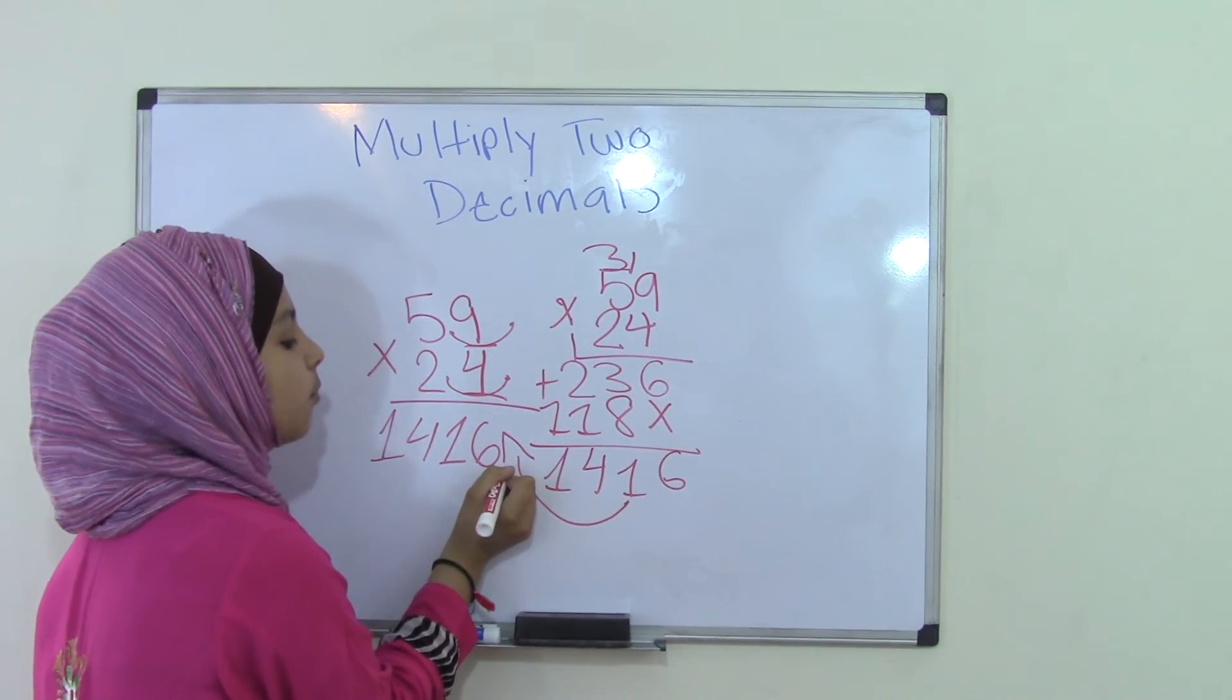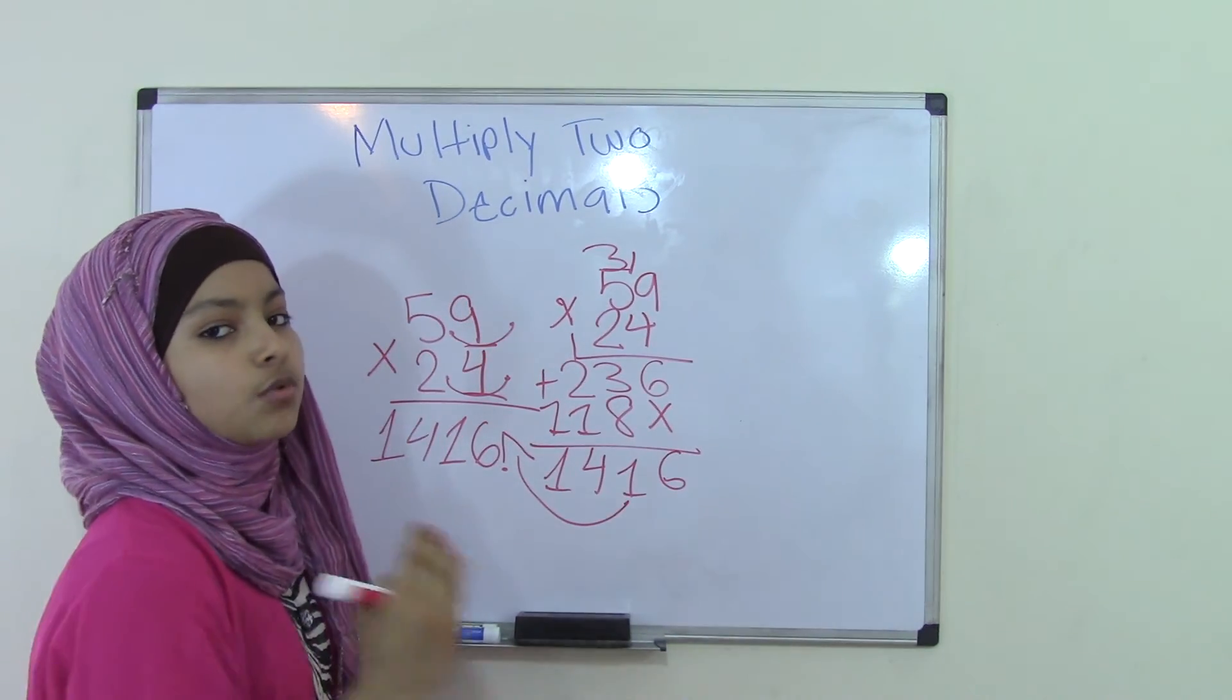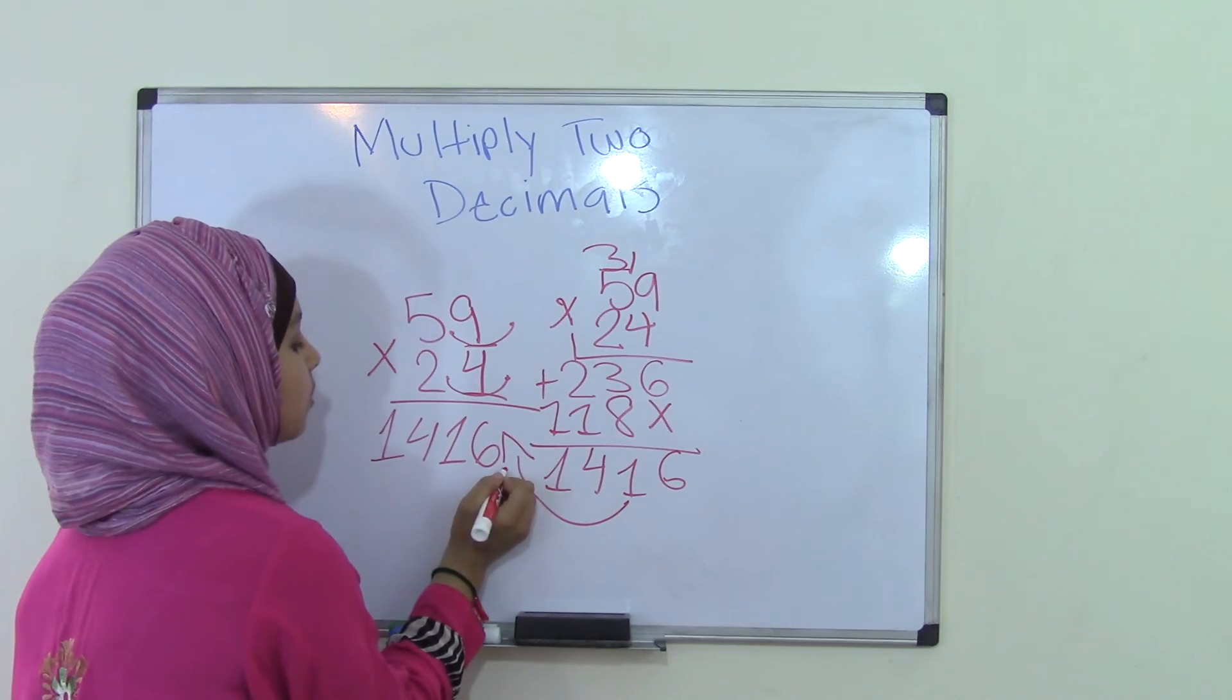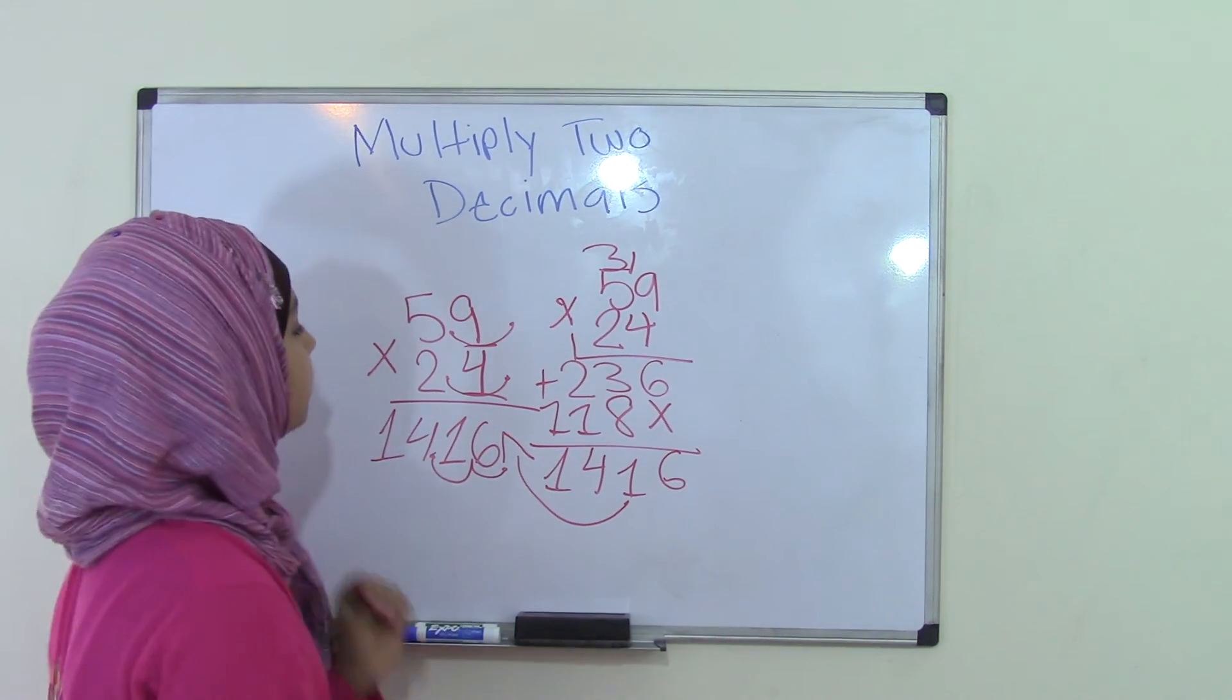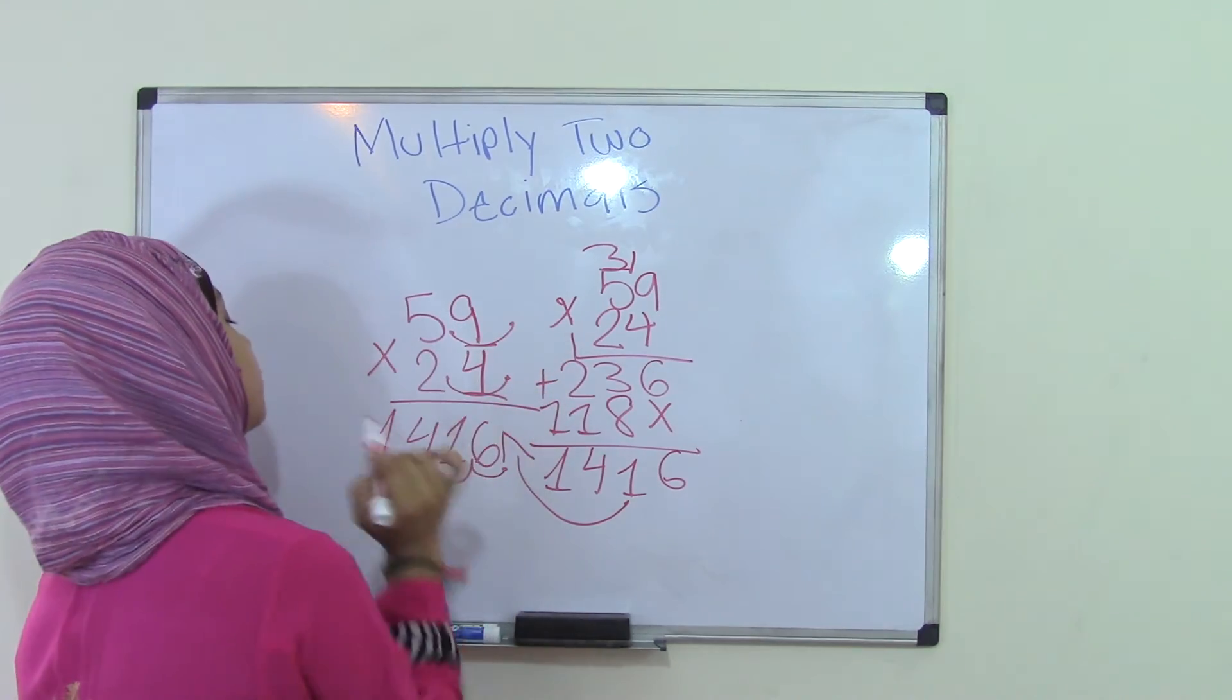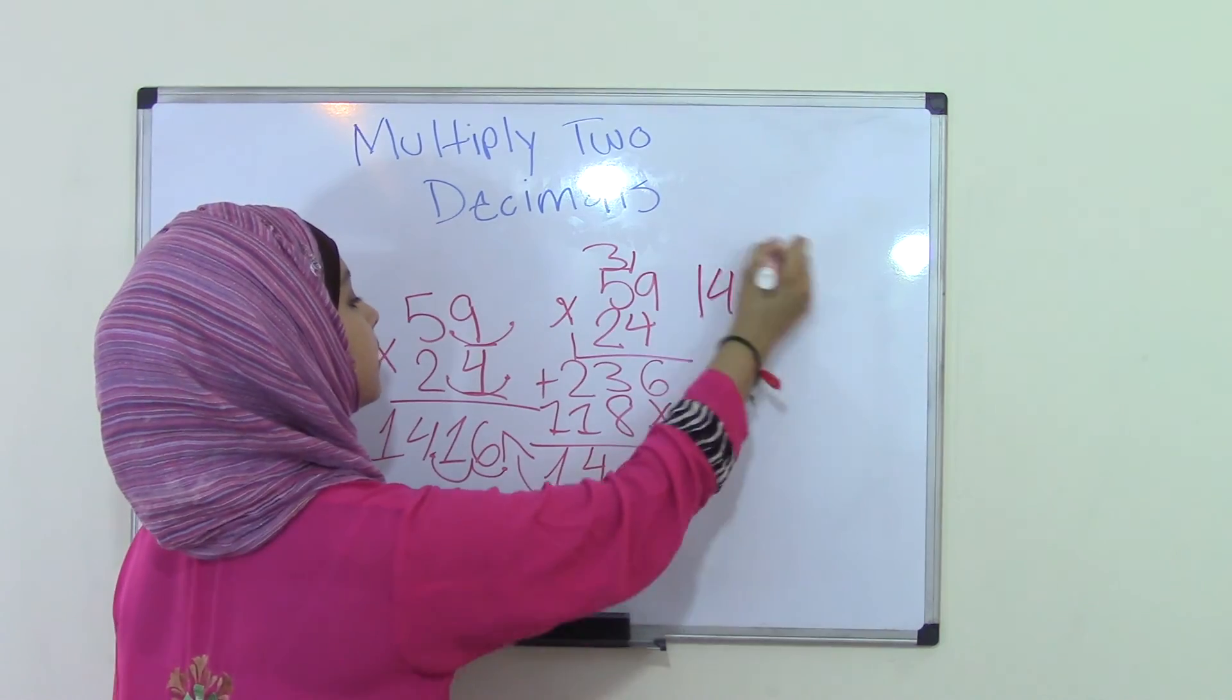So you're going to take this decimal point and you're going to move it two places from right to left. Why right to left? Because right to left decreases. So 1, 2. That means the finalized product of 5.9 times 2.4 equals, so if you're right over here, 14.16.